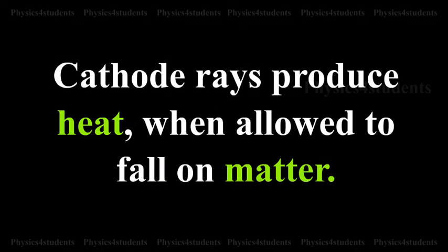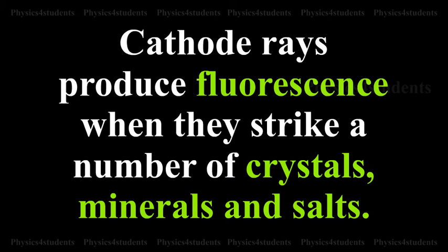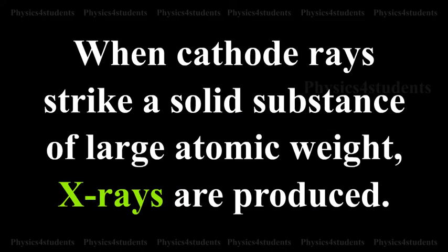Cathode rays produce heat when allowed to fall on matter. Cathode rays produce fluorescence when they strike a number of crystals, minerals and salts. When cathode rays strike a solid substance of large atomic weight, X-rays are produced.